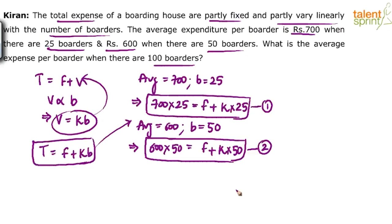Once you get f and k, substitute those values in the equation: total = f + k × number of borders. He is asking us to find out the average when there are 100 borders. Calculate the total expenditure, then divide by 100 to get the average expenditure. Remember, he is asking for average expense per border, not total expense.